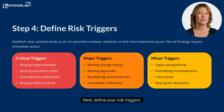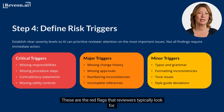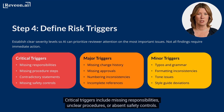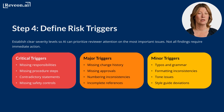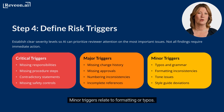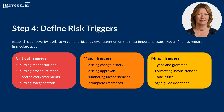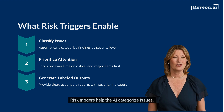Next, define your risk triggers — these are the red flags that reviewers typically look for. Critical triggers include missing responsibilities, unclear procedures, or absent safety controls. Major triggers include missing change history and numbering inconsistencies. Minor triggers relate to formatting or typos. Risk triggers help the AI categorise issues.